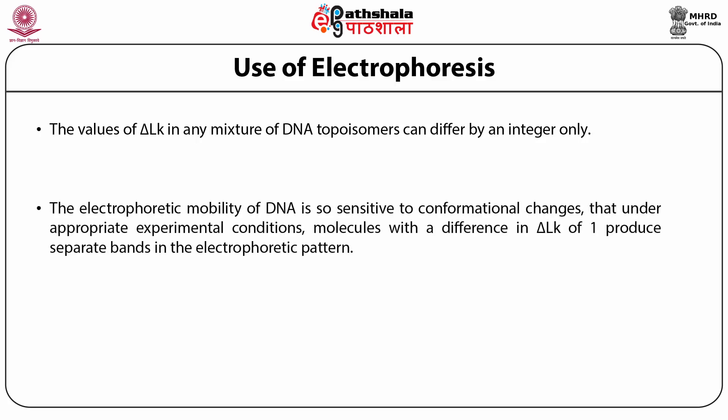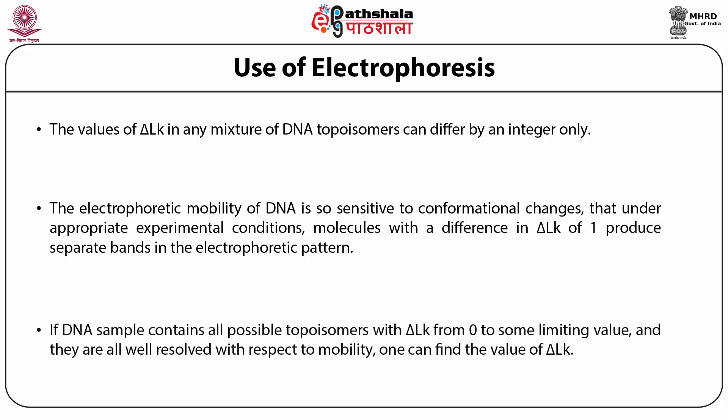The electrophoretic mobility of DNA is very sensitive to conformational changes. Under appropriate experimental conditions, molecules with a difference in delta LK of 1 produce separate bands in the electrophoretic pattern. If the DNA sample contains all possible topoisomers with delta LK from 0 to some limiting value, they are all well resolved with respect to mobility, and one can find the value of delta LK.